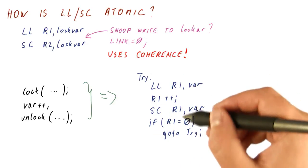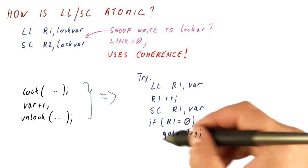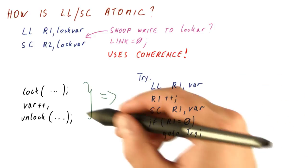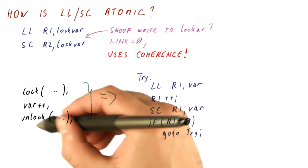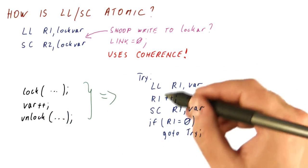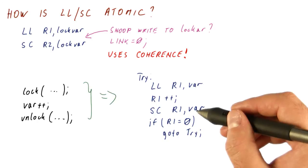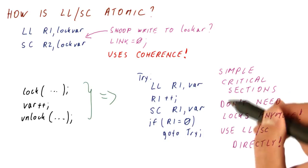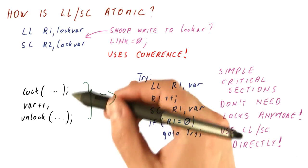So that's how, for example, we can do atomic increments and all sorts of other things that involve only one memory location. So very simple critical sections like this can actually be directly implemented with load link store conditional without even needing locks anymore. We can use load link and store conditional directly on the variable itself, and we no longer need an actual lock around it.